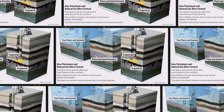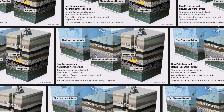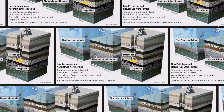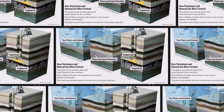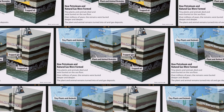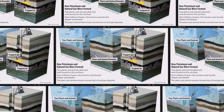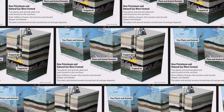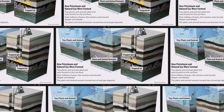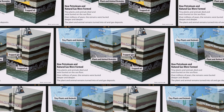Natural gas also occurs with deposits of crude oil, and this natural gas is called associated natural gas. Natural gas deposits are found on land, and some are offshore and deep under the ocean floor. A type of natural gas found in coal deposits is called coal-bed methane.